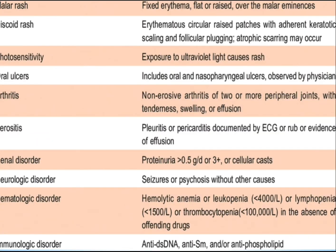Let's define some key terms. Malar rash: fixed erythema, flat or raised, over the malar eminences. Discoid rash: erythematous circular raised patches with adherent keratotic scaling, follicular plugging, and atrophic scarring may occur. Photosensitivity: exposure to ultraviolet light causes rash. Oral ulcers: includes oral and nasopharyngeal ulcers observed by a physician. Arthritis: non-erosive arthritis of two or more peripheral joints with tenderness, swelling, or effusion.